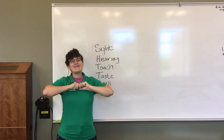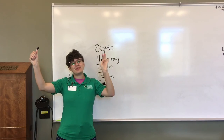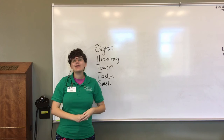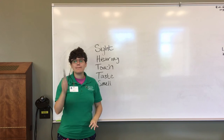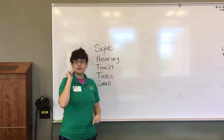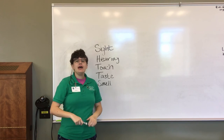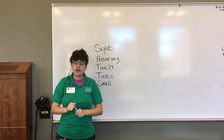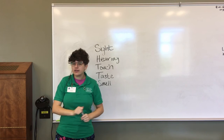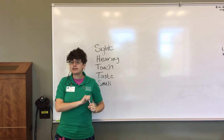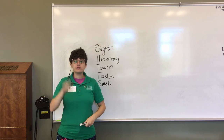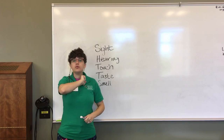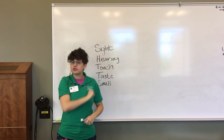Welcome back to the Bean Museum everybody. Today we're going to talk about making observations, which is very important in the job of a scientist. We use five things to make those observations.